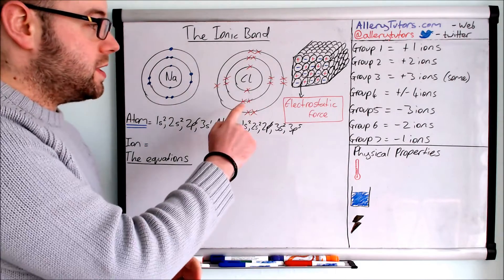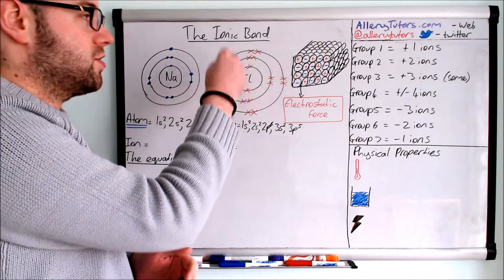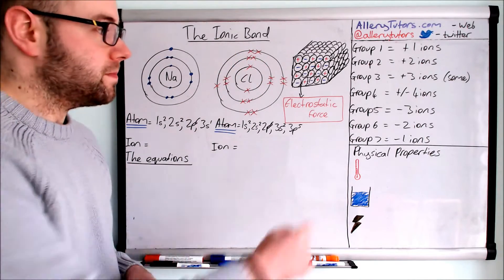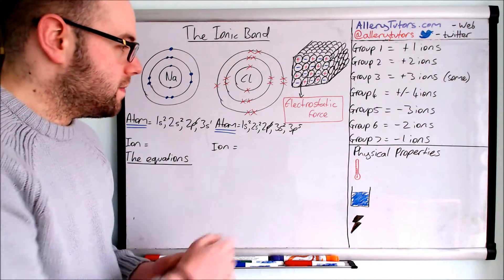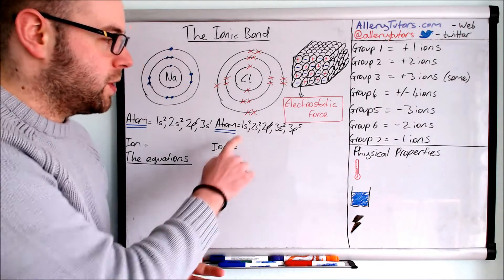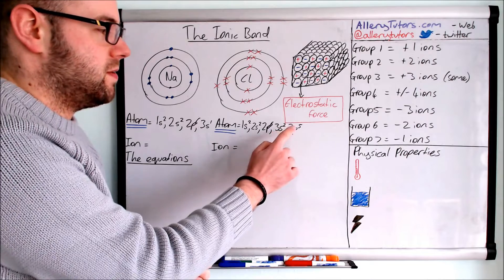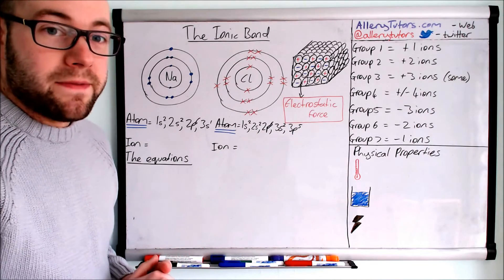This is chlorine. You can see we've got two in the middle, eight in the next shell, and seven in the outer shell. It's in group seven. So group sevens will have seven electrons in the outer shell and it has this configuration here: 1s2, 2s2, 2p6, 3s2 and 3p5.